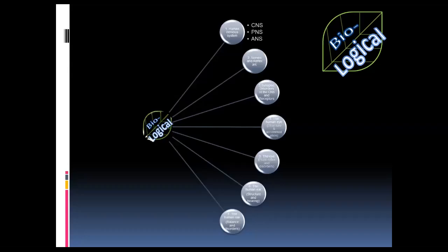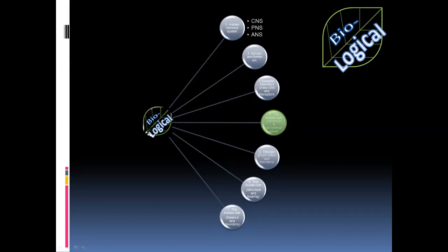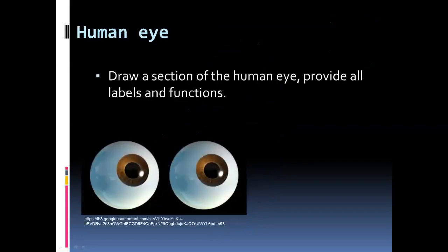In lesson four, we look at the eye and binocular vision, the structures and functions within the eye, as well as the process of accommodation. It's a good idea to draw a section of the human eye, write down all of the labels and the functions — this will help you for examination purposes.